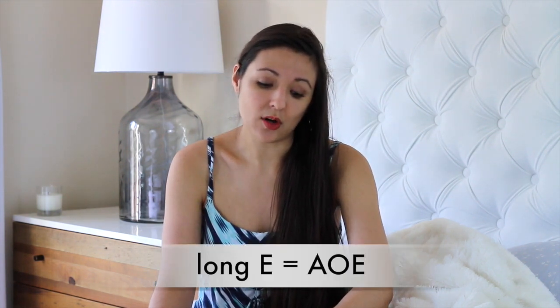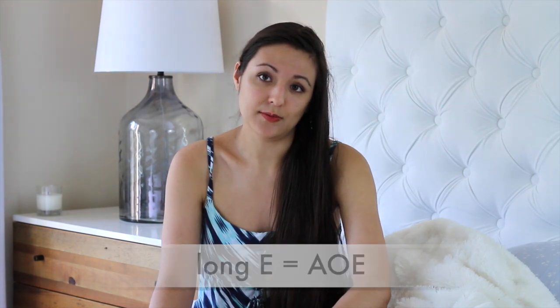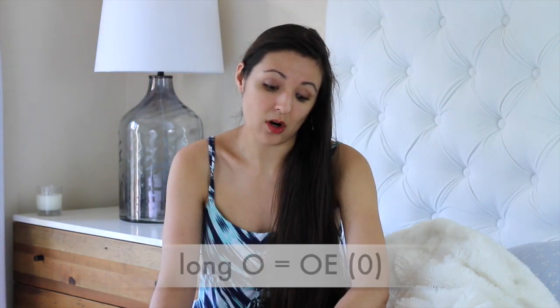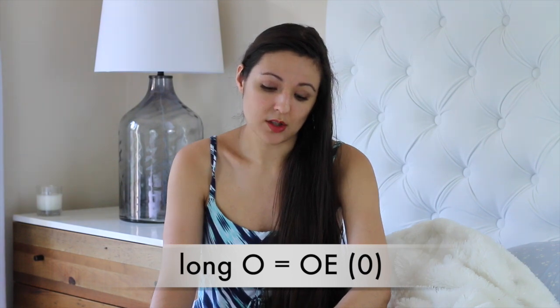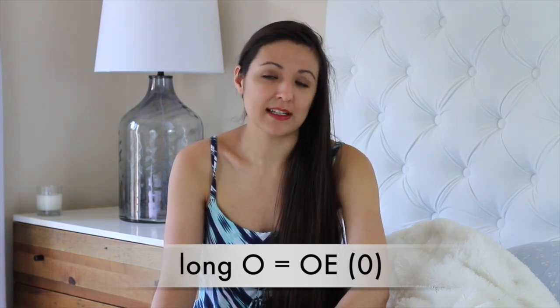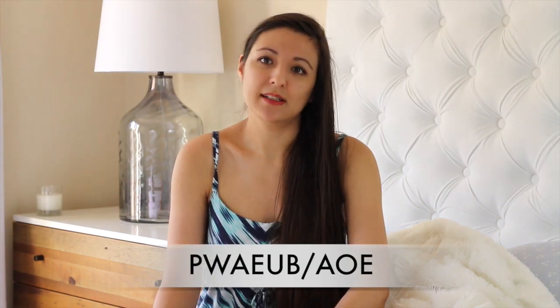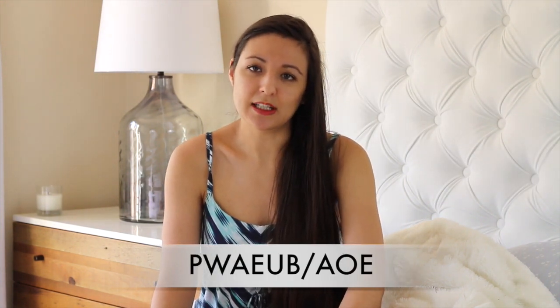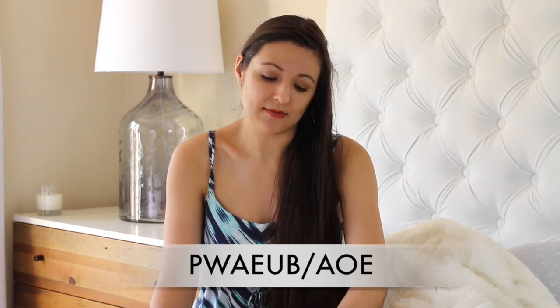Then we have long E, which is A-O-E. And then we have the long O, which is O-E. O-E by itself is basically zero — so if you're going to say 302, you write 302 and it would be 300. It's not really a word; it's a digit. And the long E is a suffix — it's an ending. So 'baby' would be B-A-B, then come back to that long E. It's not going to be a word brief; it's going to be a suffix brief.